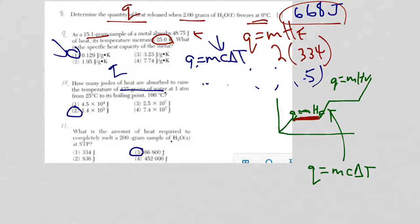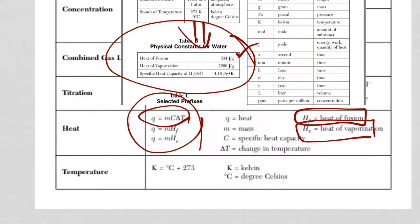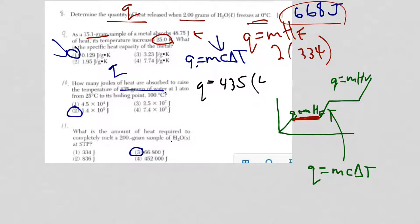So let me just erase some of this. And let's go ahead and plug in. So we want Q. Our M is 435. Our C is on the reference table, and it is 4.18. 4.18 times delta T. So it's 100 minus 25, which is 75.